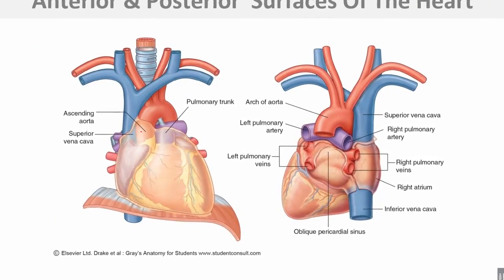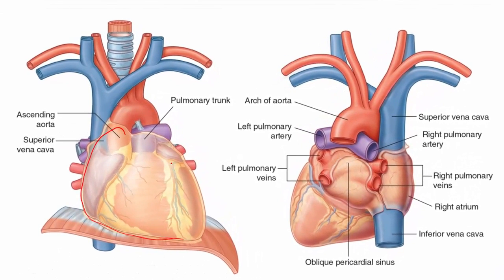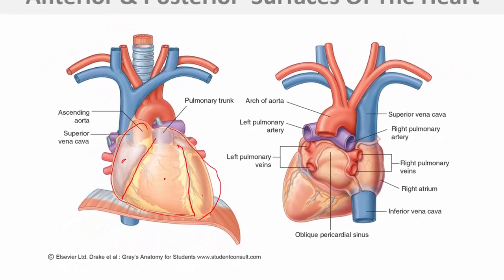The sternocostal surface of the heart is divided by the atrioventricular groove or coronary groove into the atrial part and the ventricular part. The ventricular part is subdivided by the anterior interventricular groove into right two-thirds for the right ventricle and left one-third for the left ventricle.